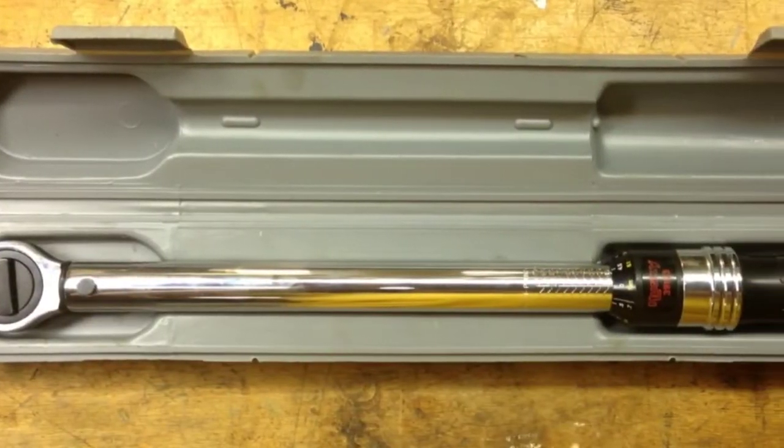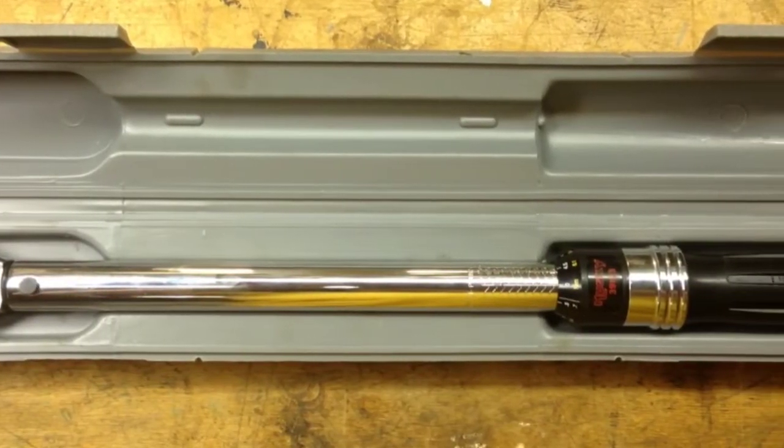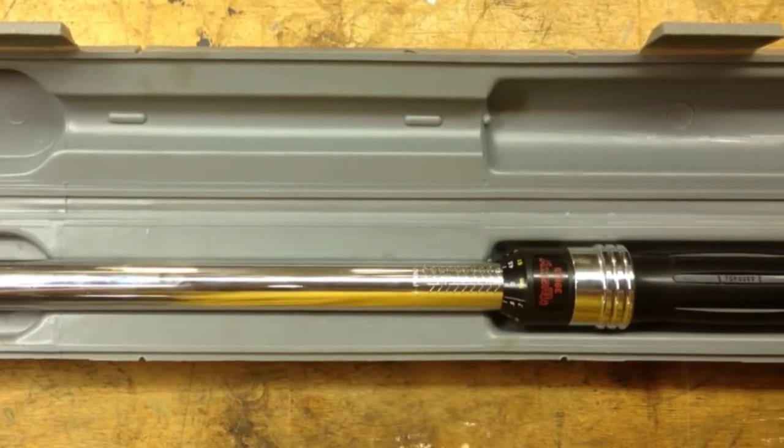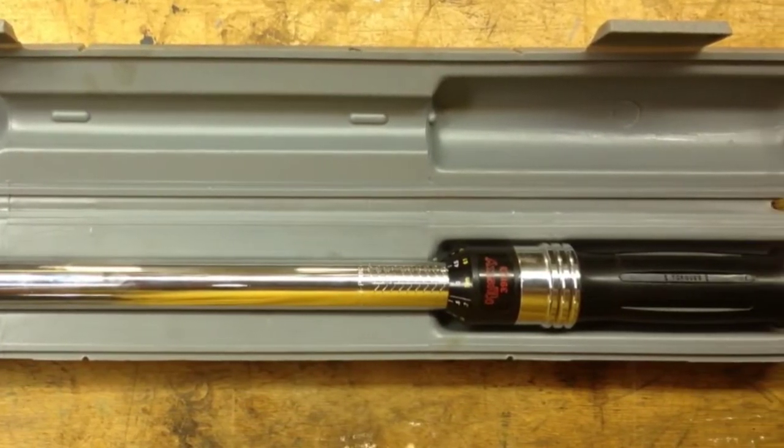Hello, this is HowToBob, and today we're going to cover how to use a torque wrench. This particular torque wrench goes from 0 to 100 foot-pounds.